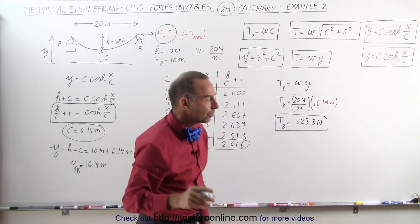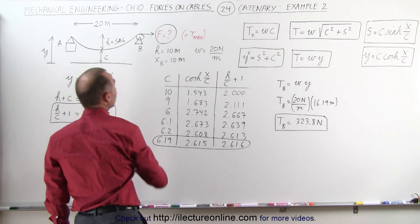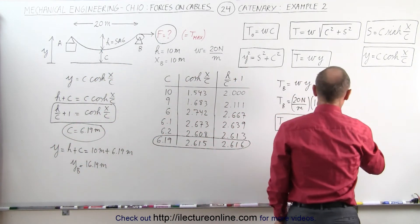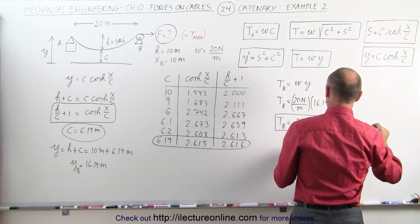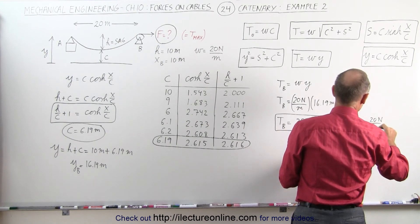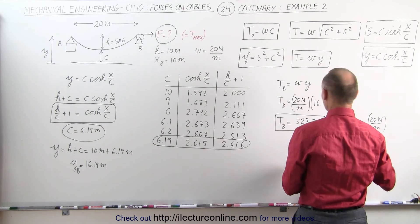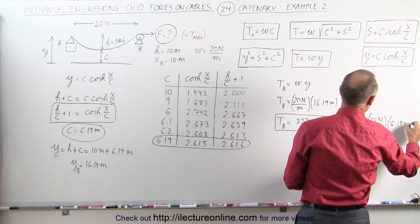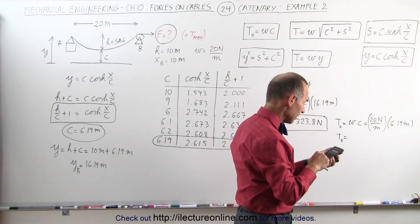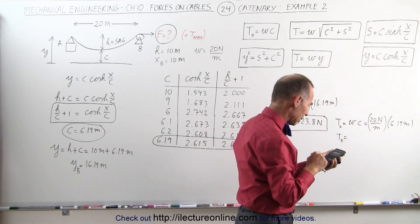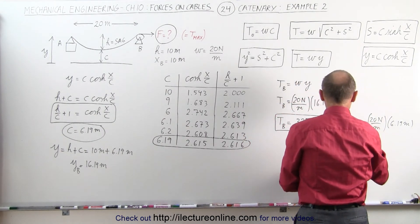Now let's find the tension at the lowest point on the cable, T₀. T₀ equals w times c, which is 20 newtons per meter times 6.19 meters, giving T₀ equals 123.8 newtons. That's the tension at the lowest point on the cable.